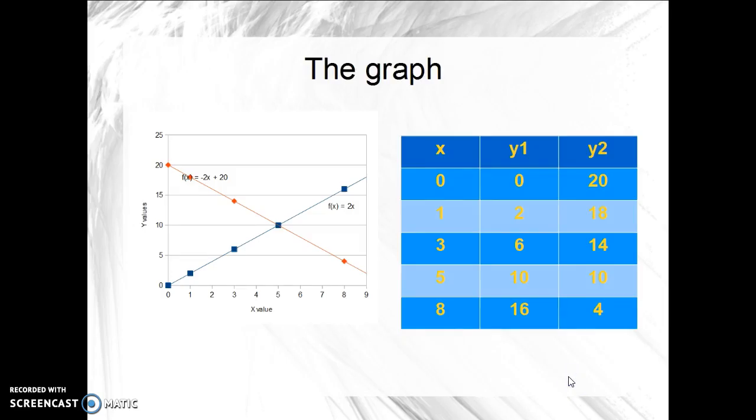Here's the graph, including some sample numbers that we've put. And you can see that the intersection point is at 5 comma 10. That's where both equations have the same x and y.